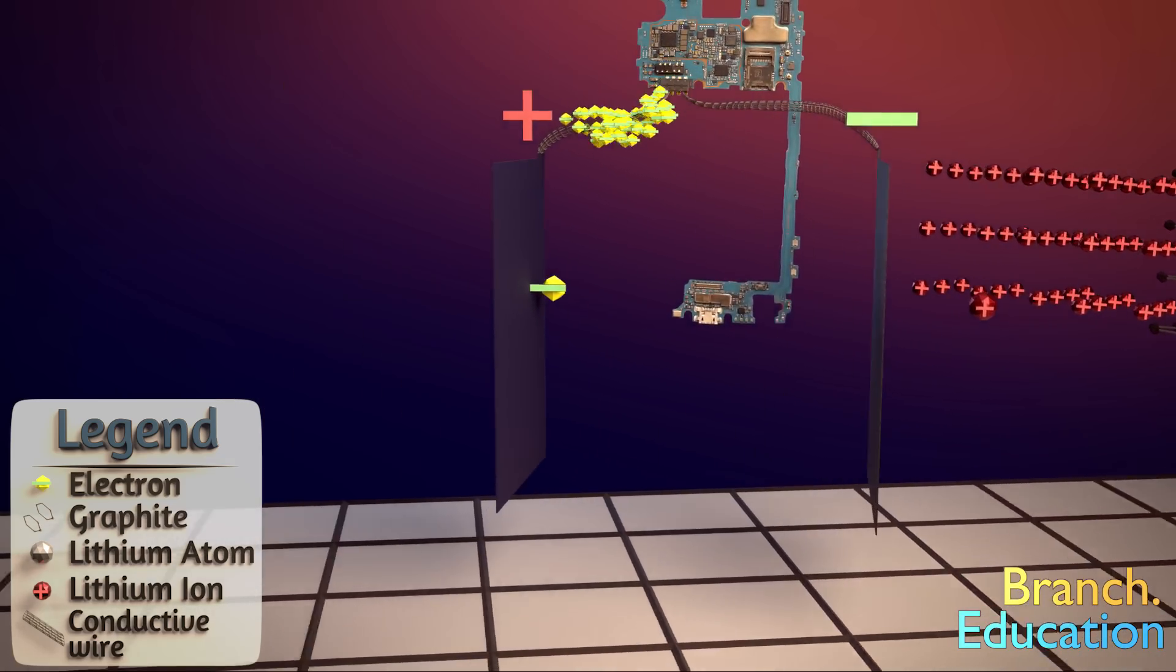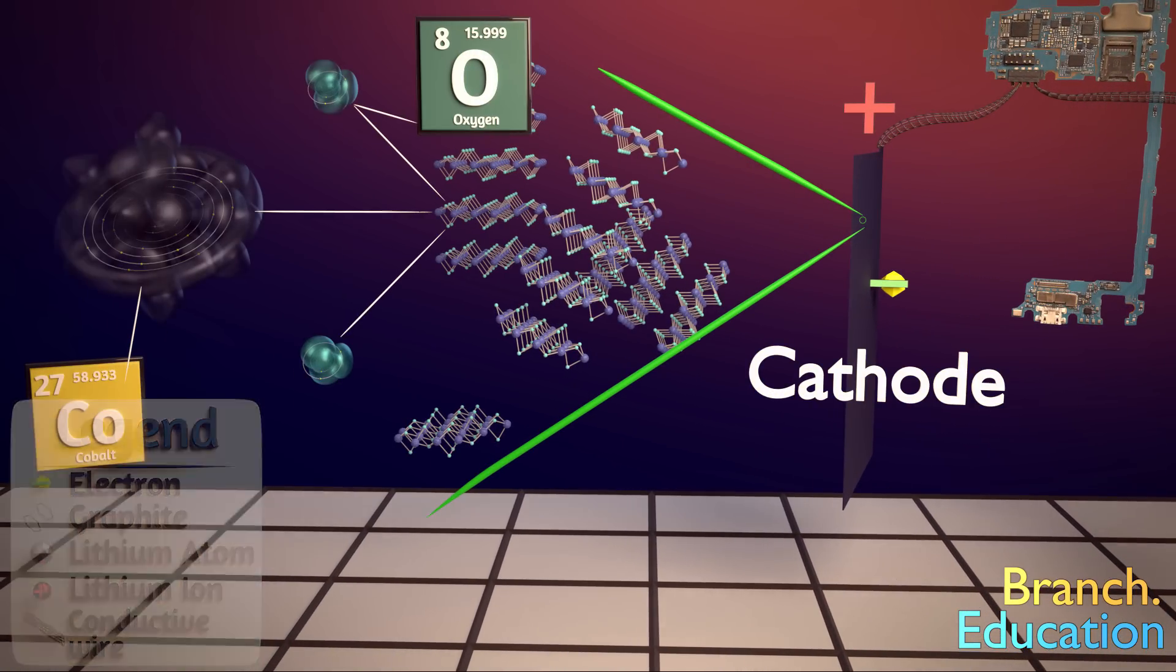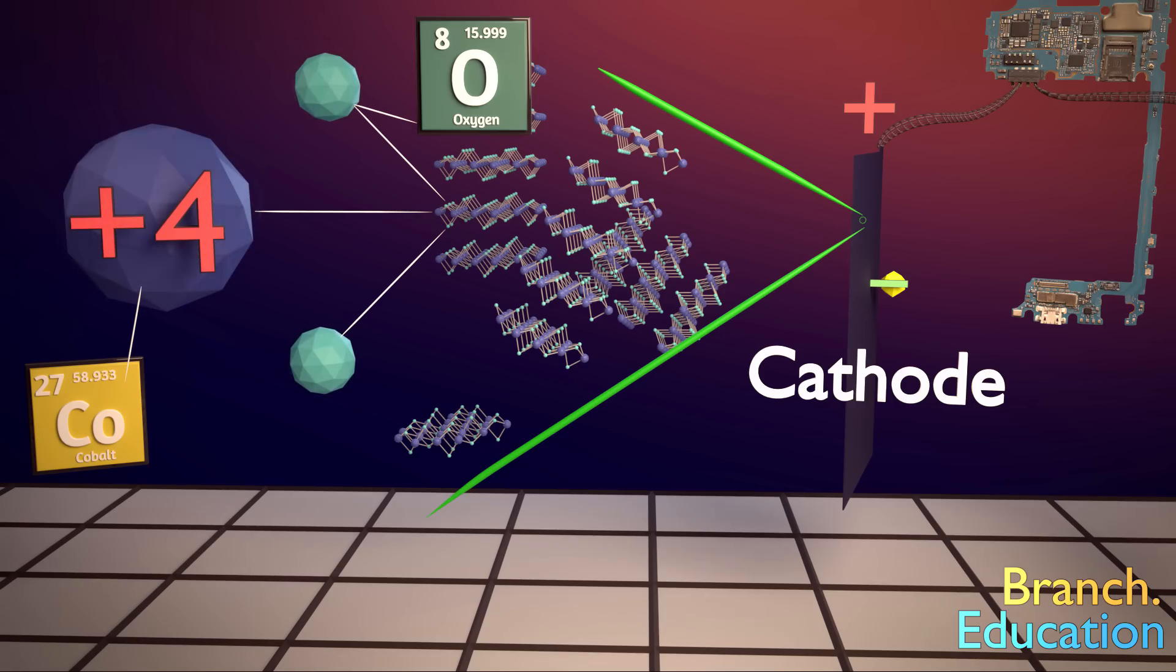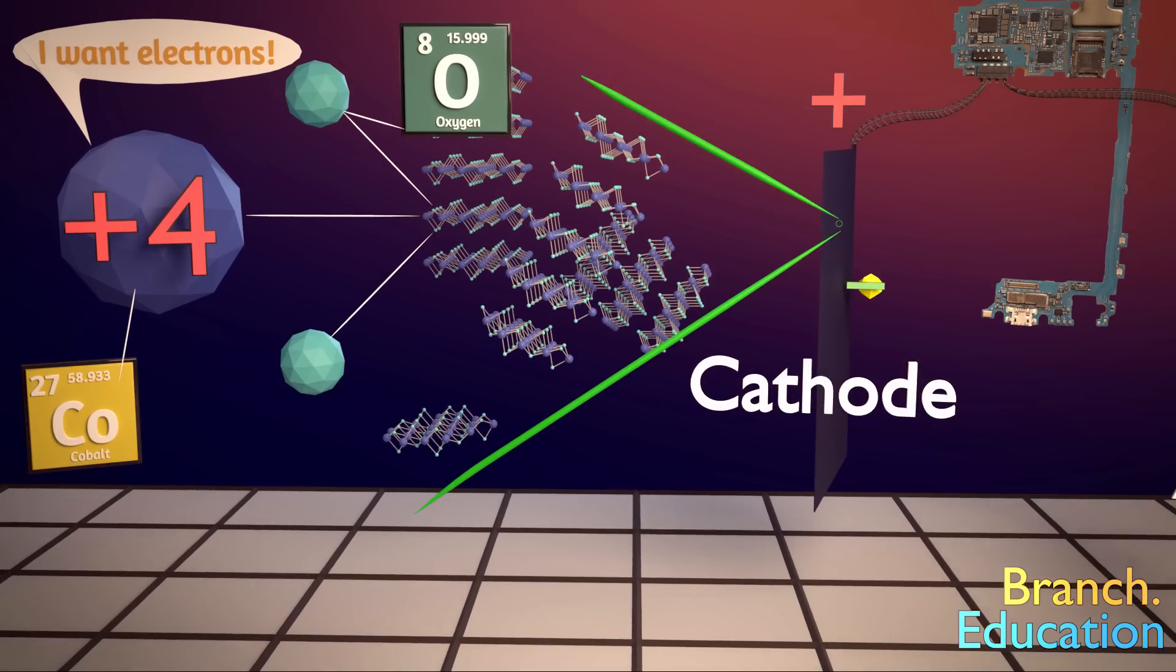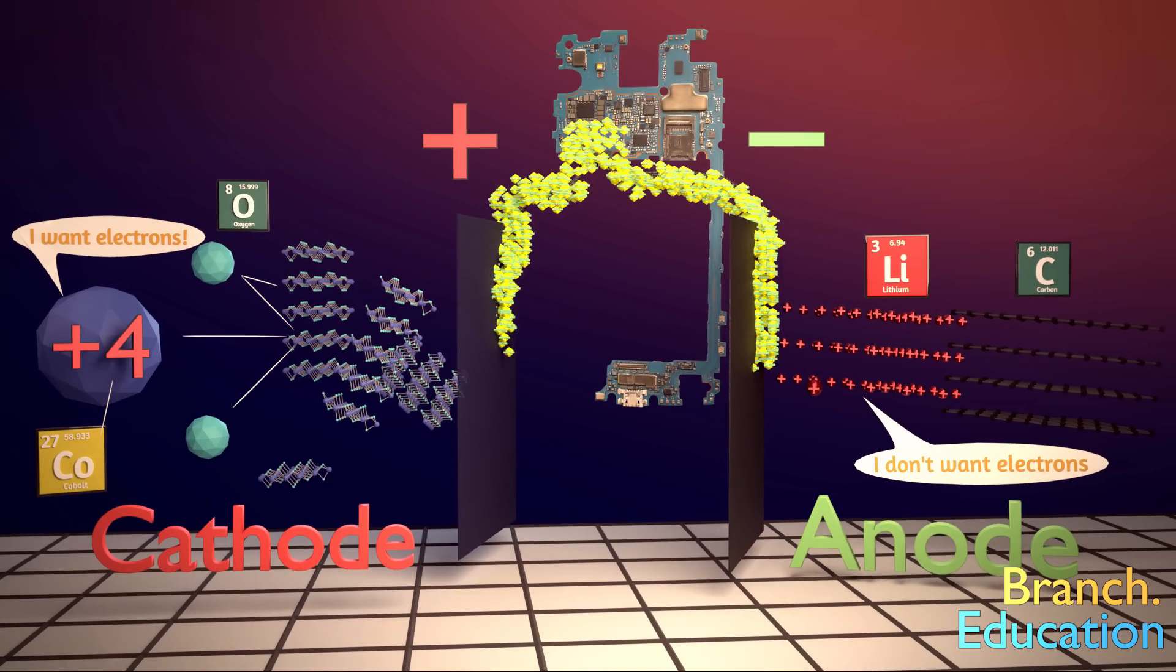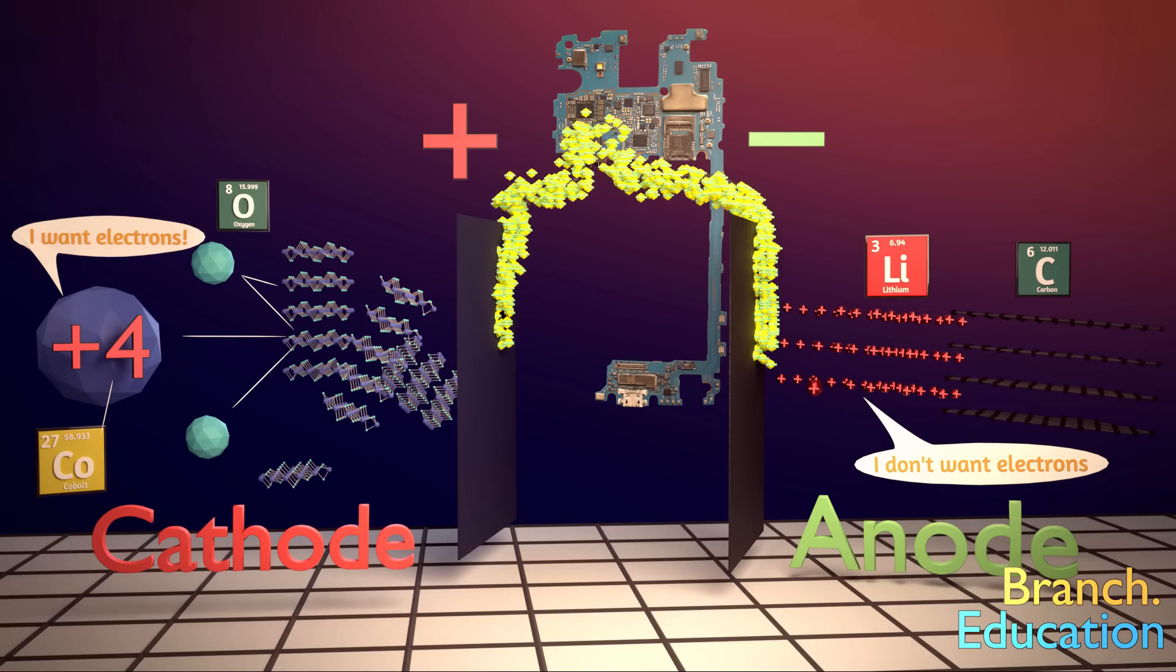So, let's now jump to the positive terminal, which is technically called the cathode. Here we have cobalt, which has lost some electrons to oxygen, thus making the cobalt positive, or plus four charged. As a result, it wants to gain back an electron. So when we connect the negative and positive terminals to our smartphone, the electrons flow from the lithium, which wants to give up an electron, through the circuits and components in the smartphone, and to the cobalt, which wants to gain an electron.